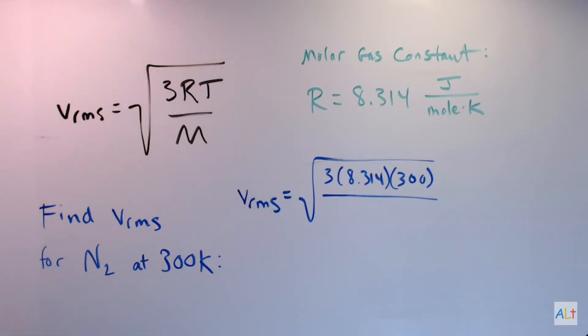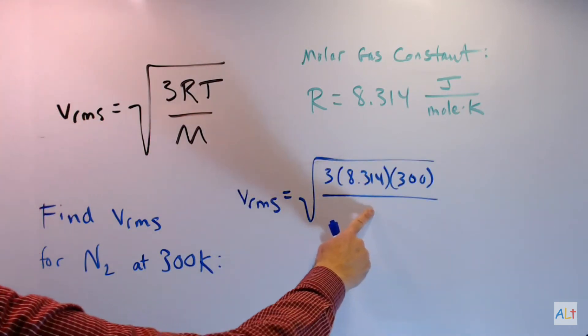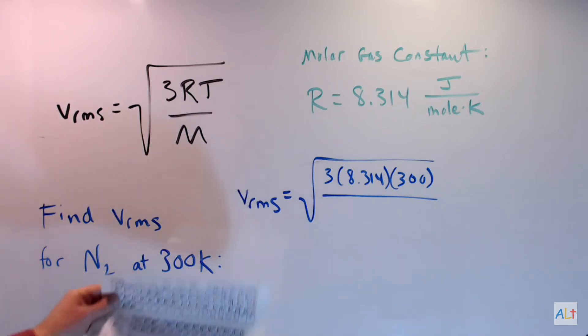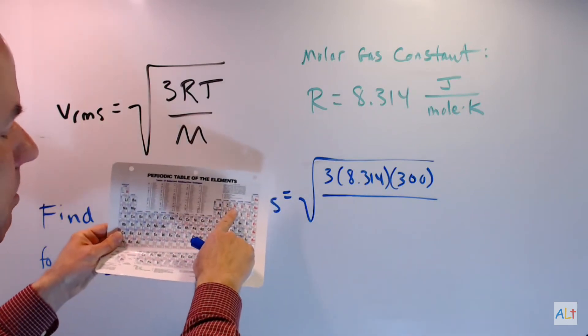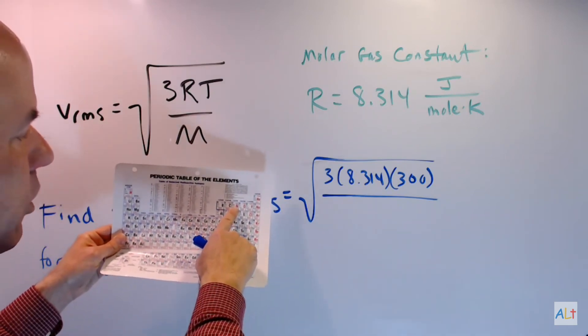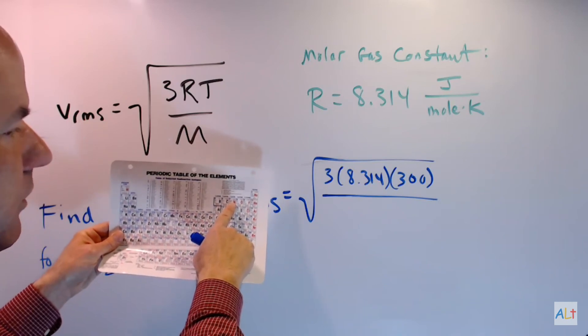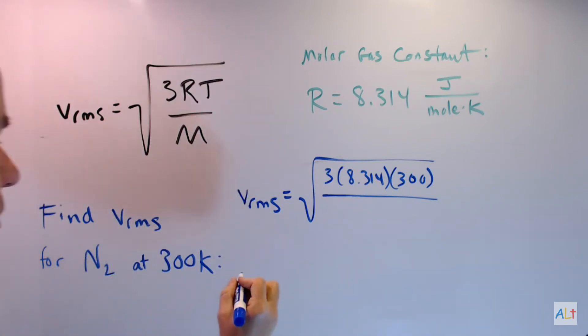So the question is, what exactly are we going to put into here? We'll start with the periodic table. We'll look up nitrogen. We see that the atomic mass is 14.0067. I'll round that off to 14.